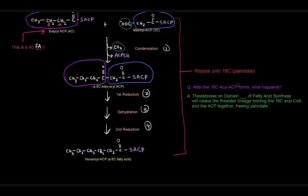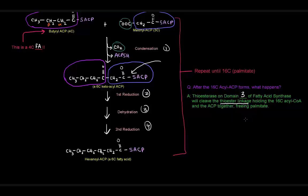After we get the 16-carbon acyl-ACP, it needs to be released. The thioesterase on domain 3 of fatty acid synthase cleaves the thioester linkage holding the palmitate to the ACP. Once that linkage is cleaved, palmitate is free and floats in the cytosol, likely to be used for fat production.